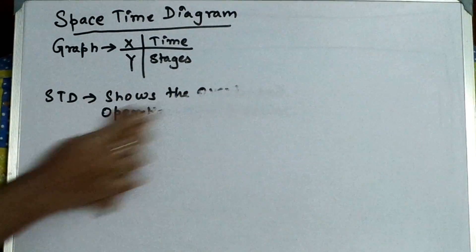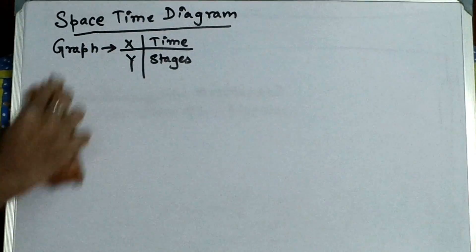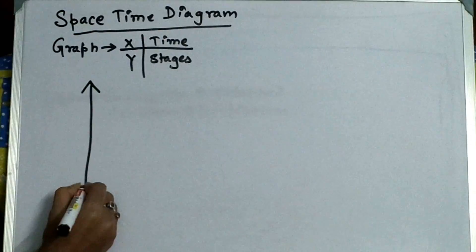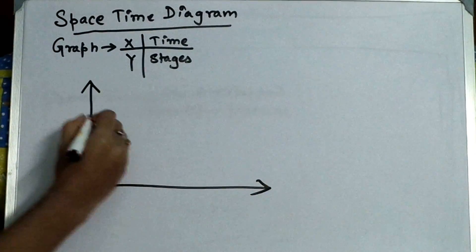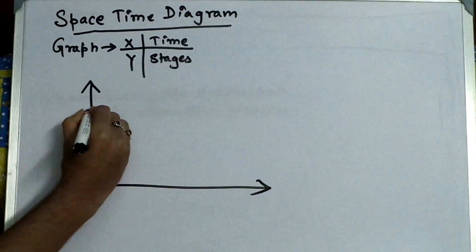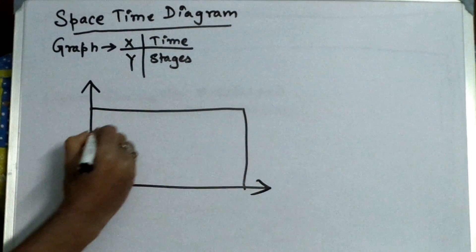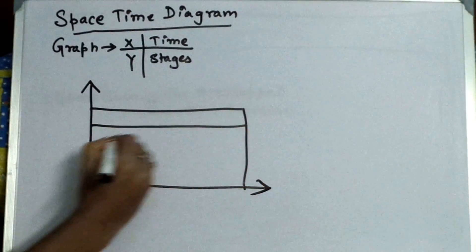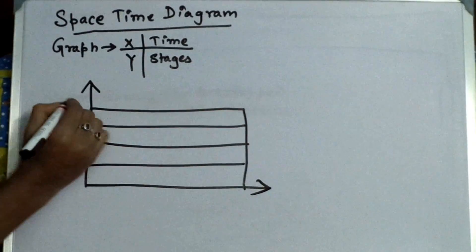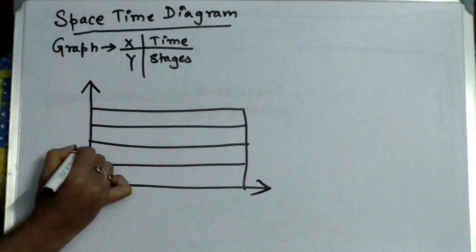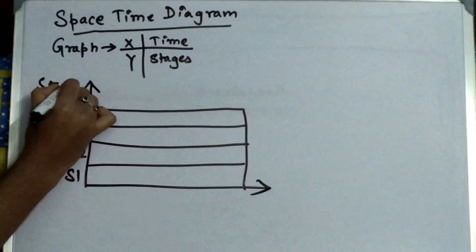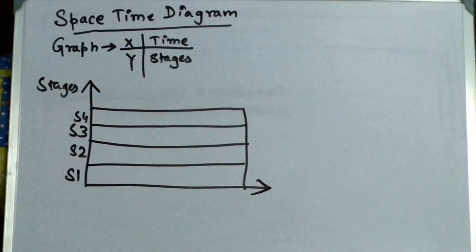So what is the meaning of it? I am going to show you with an example. So let this be a graph having four stages. Say I am first drawing the graph S1, S2, S3, and S4. These are the stages. This is the time or cycles.